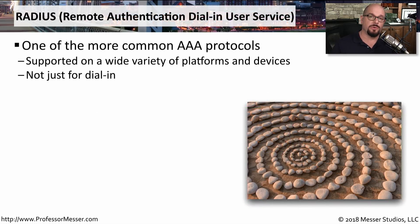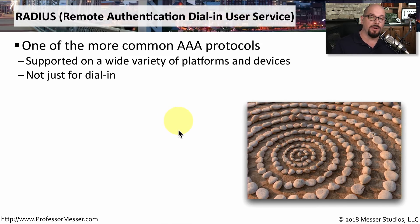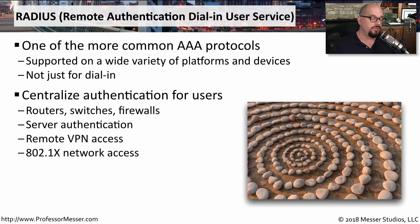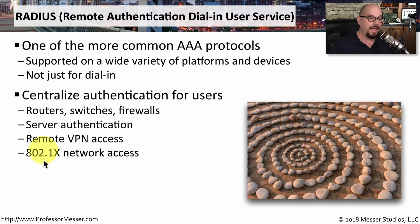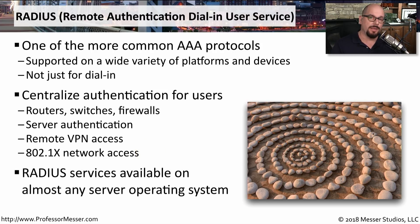A very common protocol used for this AAA service is RADIUS — Remote Authentication Dial-In User Service. Although the name has 'dial-in' in it, it is one of the most popular authentication protocols used for much more than just dial-in. The RADIUS protocol may be used to authenticate users to routers and switches, provide access to servers, gain access over VPN tunnels, and may be used over wireless networks using 802.1x.